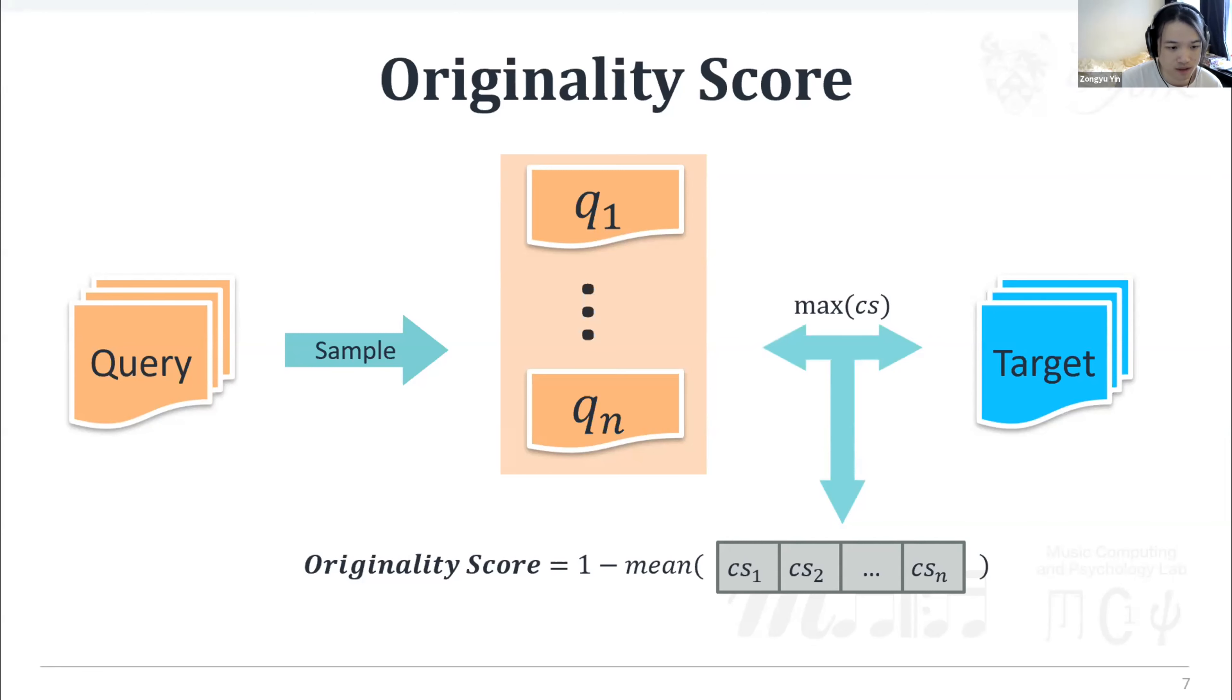Then we obtain the mean value of the list of cardinality scores, which for now represents the similarity between two corpus. So we subtract the mean value from 1 to get the originality score for this pair of query and target corpus.